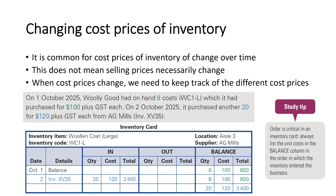On the 1st of October, Woolly Good had on hand eight coats — WC1L — which it purchased for $100. On the 2nd of October, they purchased some more inventory, but this time the cost price jumped from $100 to $120.